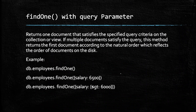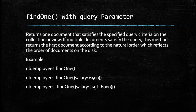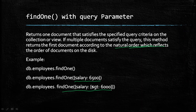MongoDB also provides the findOne method to get data from the database. It returns one document that satisfies the specified query criteria on the collection. If multiple documents satisfy the query, this method returns the first document according to natural order, which reflects the order of documents on the disk. We can use findOne without any parameter to return only the first document, or pass a query parameter like salary equals 6500, or use a greater-than operator for employees getting more than a specified salary.